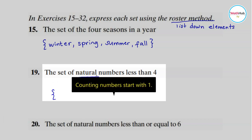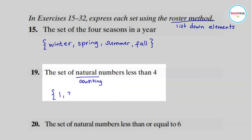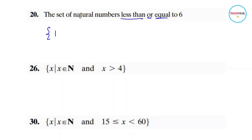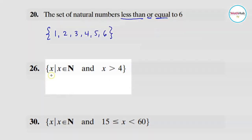Next, number 19: the set of natural numbers less than four. Natural numbers are counting numbers. When you count you start with one, so for counting numbers less than four, we have one, two, three, and that's it. Next, we write in roster form the set of natural numbers less than or equal to six, so we start with one and end at six: one, two, three, four, five, six.